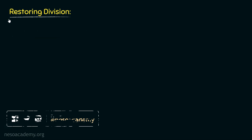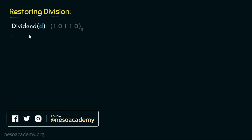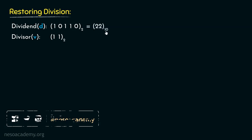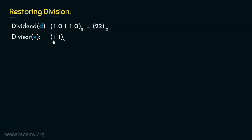We are performing the restoring division method with a dividend of 10110 and a divisor of 11. Now, 10110 in binary is actually 22 in decimal and 11 in binary is 3 in decimal. So let's perform the division now.